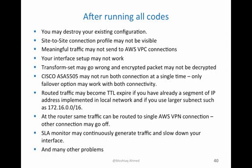Even after downloading the configuration and updating interfaces and policies, the auto-downloaded configuration may not be right for you and could destroy your existing configuration. I found that the site-to-site VPN connection profile is not visible after running that configuration, meaningful traffic may not send from AWS VPC connections, interfaces may not work, the transform set may go wrong, encrypted packets may not be decrypted, and the Cisco ASA 5505 may not run both connections simultaneously.